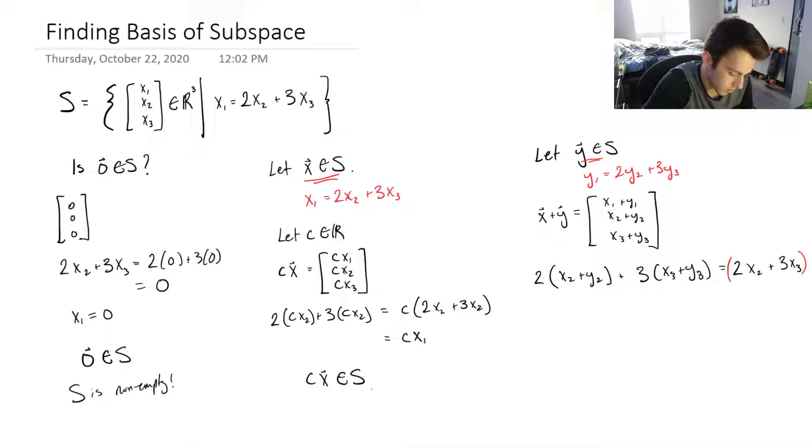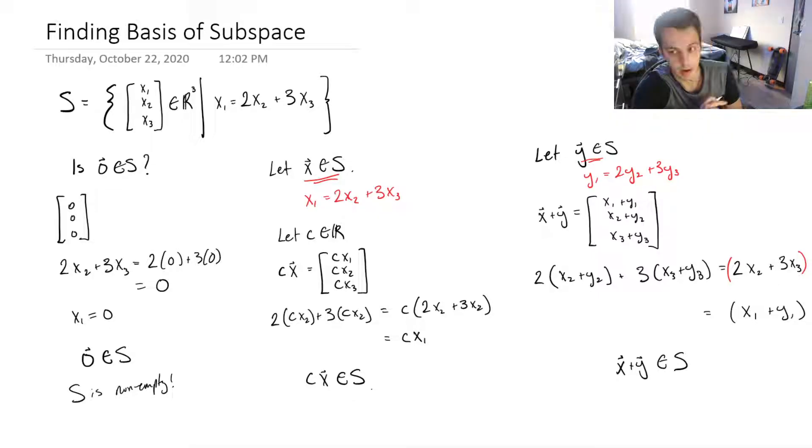And we know that this green part, that's going to be y1, because we defined y in S. So, this is just x1 plus y1, which is exactly what we wanted to get it into, right? That 2 times the second component plus 3 times the third must be equal to the first component. So, we've just shown now that x plus y is also within S, which means that S is closed under vector addition.